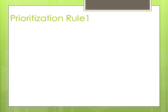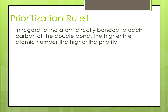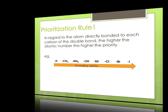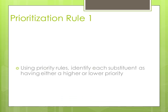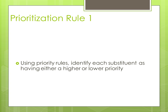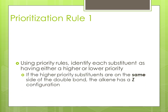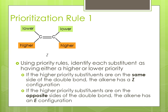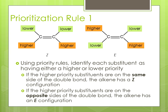Prioritization Rule 1. In regards to the atom directly bonded to each carbon of the double bond, the higher the atomic number, the higher the priority. Using the priority rules, identify each substituent as having either a higher or lower priority. If the higher priority substituents are on the same side of the double bond, the alkene has a Z configuration. If the higher priority substituents are on the opposite side of the double bond, the alkene has an E configuration.